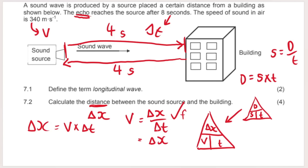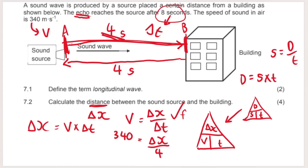Write the formula first: v = Δx/Δt. We're solving for Δx. The speed of sound in air is 340 m/s. Use time = 4 s (one-way journey) to get exactly the distance between source and building. Substituting: Δx = 340 × 4 = 1360 metres. If you used 8 seconds instead, you'd get double the distance and would need to halve it. Either approach works if done correctly. Include the unit — metres.